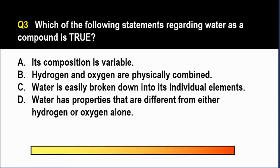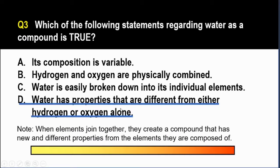The correct answer is letter D. When you have a compound such as water, the atoms are chemically combined. So letter B is incorrect. We can eliminate that already. Since the atoms are chemically combined, then it would have properties that are different from either hydrogen or oxygen alone.